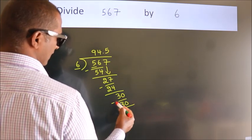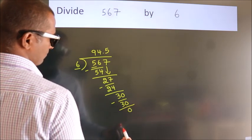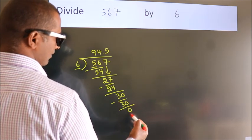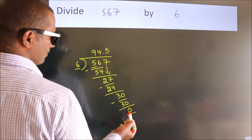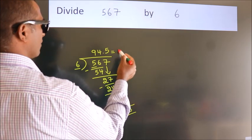Now we subtract. We get 0. Here we got remainder 0, so this is our quotient.